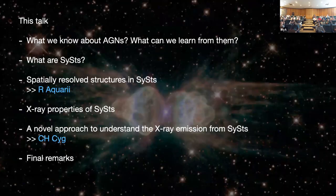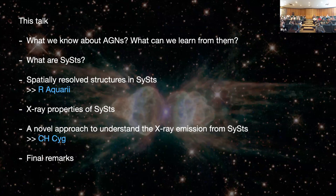In this talk, I will give a very brief introduction to AGNs, which I typically do not do. Then I will speak about symbiotic stars, then go into spatially resolved structures in symbiotic stars — in particular, the only one resolved, which is R Aquarii. Then I will go into the X-ray properties of symbiotic stars to present what we did for CH Cygni, and then give some final remarks.